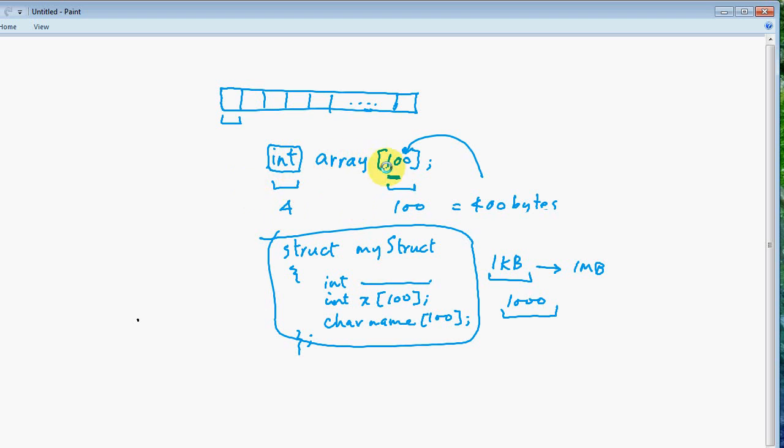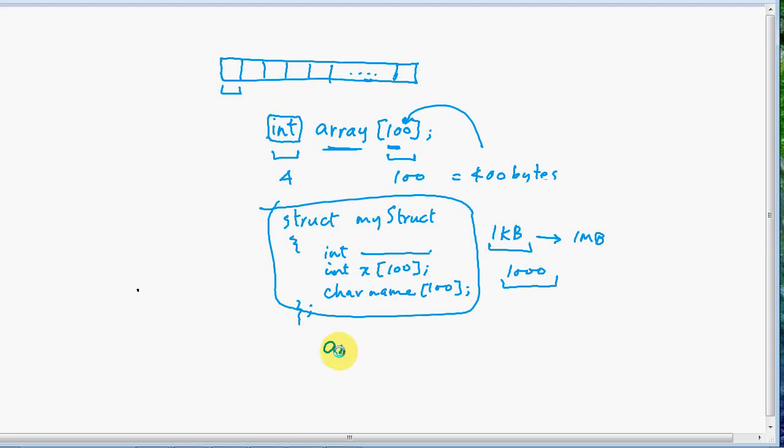So if you declare an integer array like this, and then you are accessing the elements, for example, if you have to access element number one, this is how you access the element number one. Array of one.